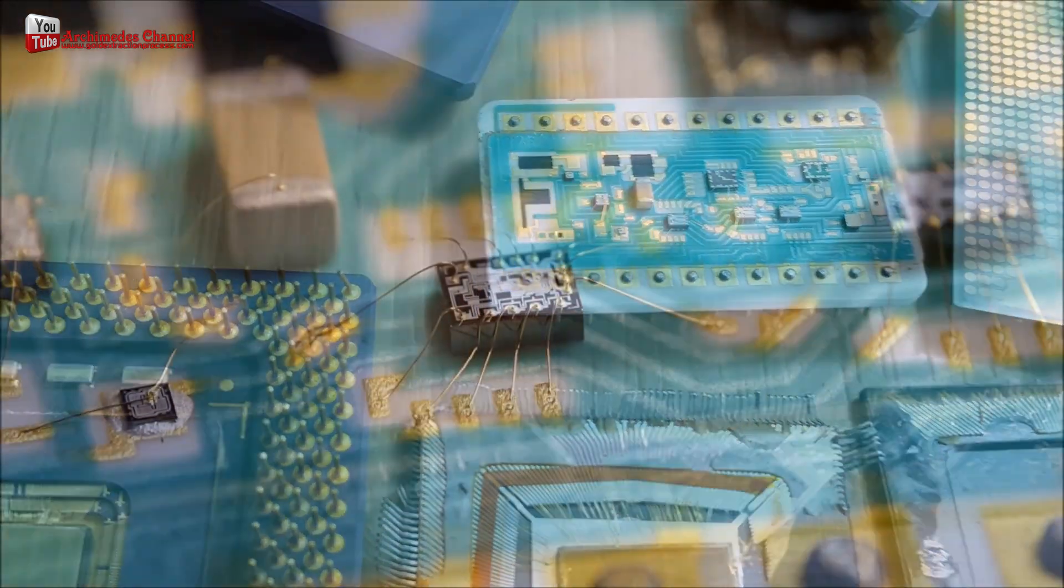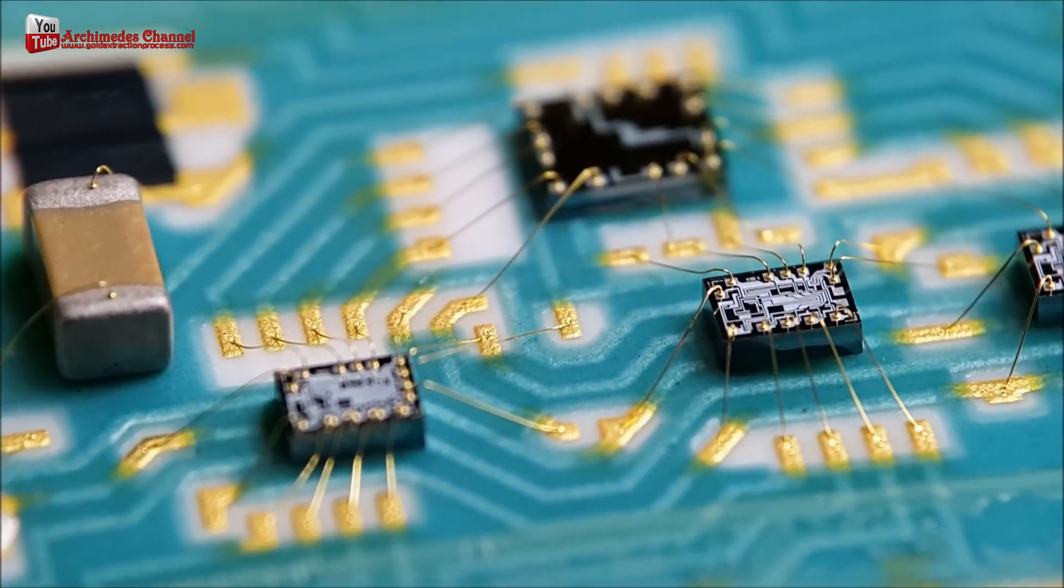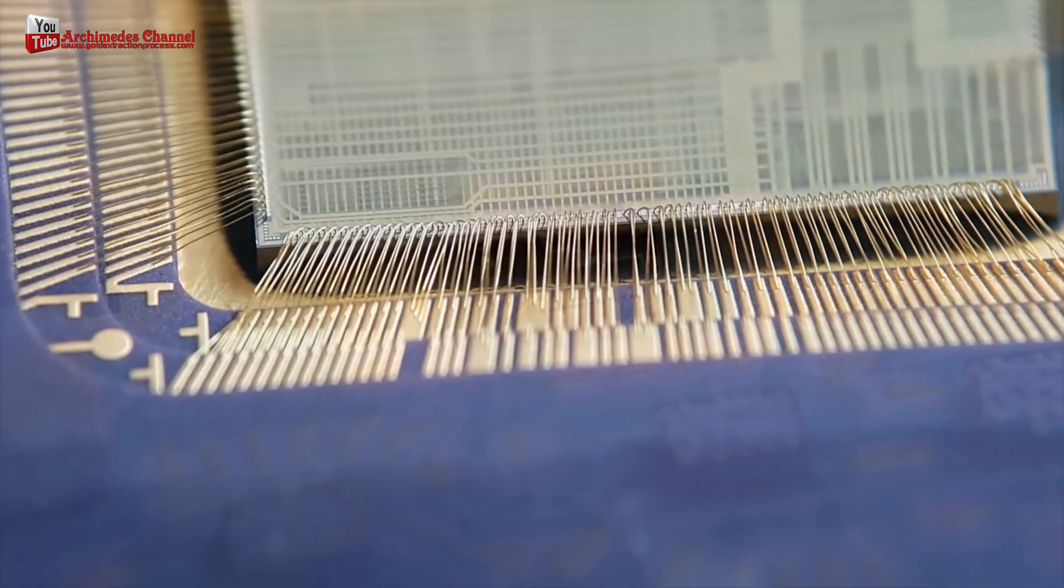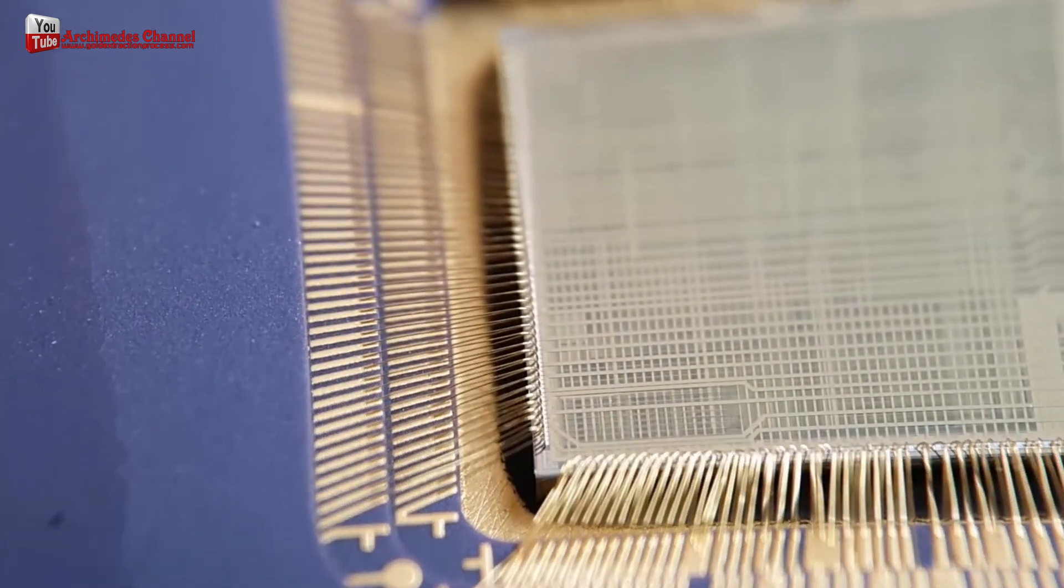Once the gold wire is extracted, it can be refined to remove any impurities and increase the purity of the gold. This refining process can be done using a variety of methods, including chemical leaching, smelting and electroplating.